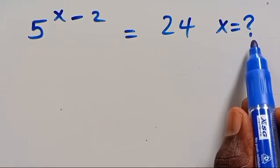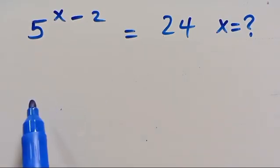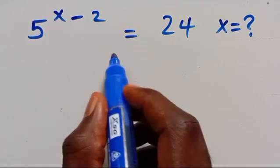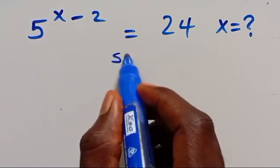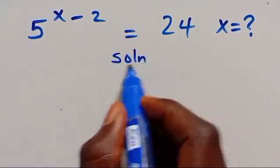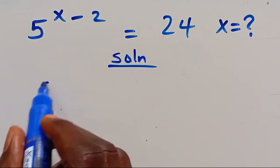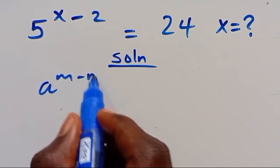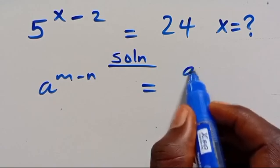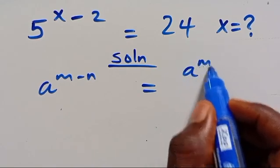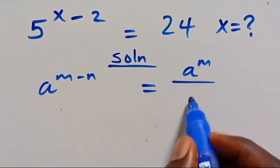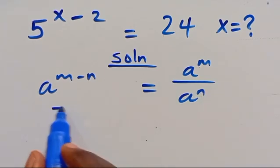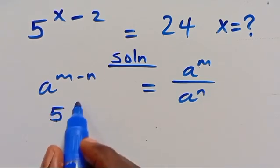What is the value of X given that you have 5 to the power of X minus 2 equals 24? We recall that we have a to the power of M minus N equals a to the power of M divided by a to the power of N. So from here we have 5 to the power of X